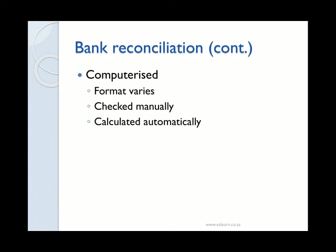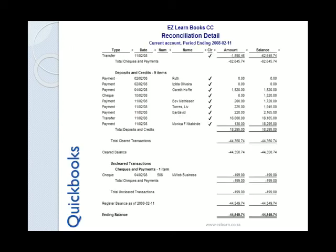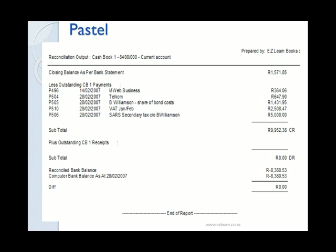This certainly makes it easier — you can see immediately when there are no differences and your reconciliation is complete. This is an example of what a QuickBooks reconciliation might look like. It is quite detailed and shows all the items that you have cleared or ticked off by comparing them to the bank statement. You can also see the unclear transactions at the end and the difference between the cleared balance on the bank statement and your bank account balance. This is what a Pastel reconciliation might look like — it is a little more close to what you have studied, where you start with your bank statement balance and then add and subtract outstanding deposits and payments to get the amount in your bank balance.